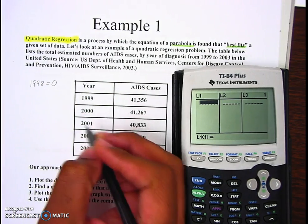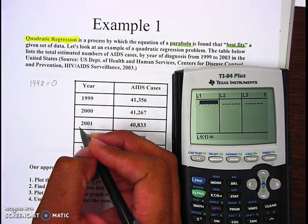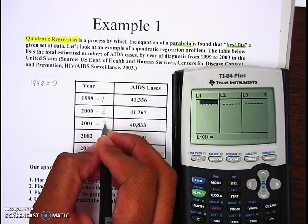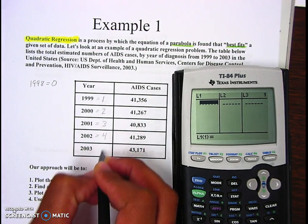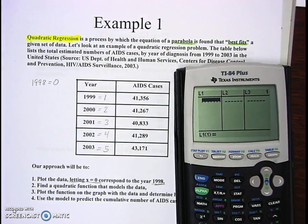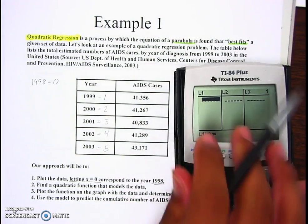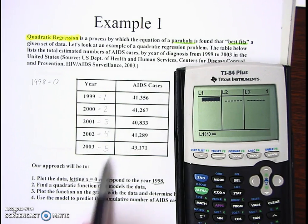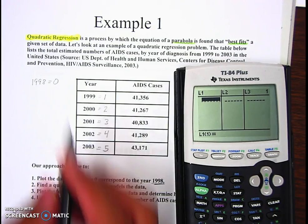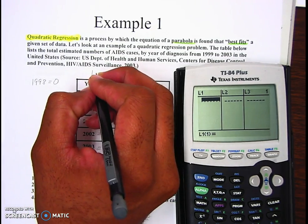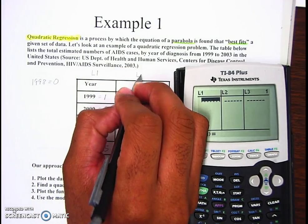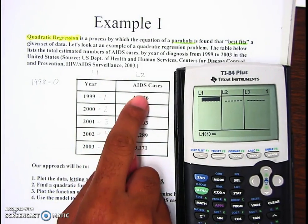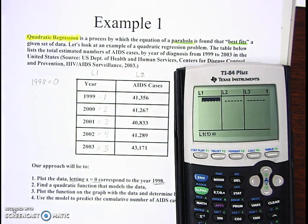If 1998 equals 0, then 1999 equals 1, 2000 would be 2, 2001 is 3, 2002 is 4, 2003 is 5. In the calculator you're going to put in 1, 2, 3, 4, 5 for the first column in L1, and these numbers here for the second column in L2. Let's do that part.